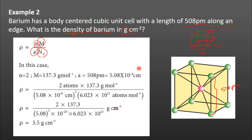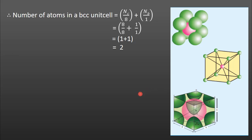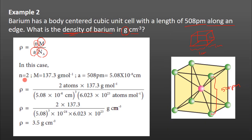In this case, the number of atoms in the unit cell is body-centered cubic. We can see this from the diagram. For a BCC unit cell, n is equal to 2.